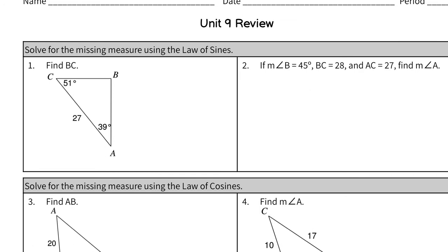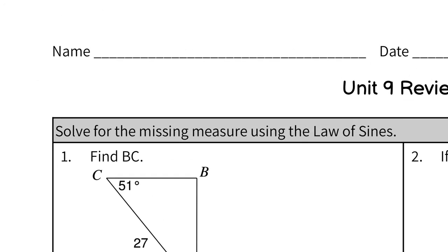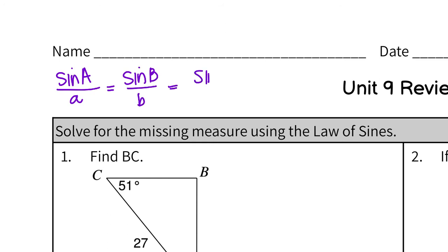So with law of sines, it's the one that had fractions in it. So the sine of each angle — sine of capital A — divided by its opposite side, is proportional with each angle and side in the triangle. Capital letters are angles, lowercase is the opposite side. All of these ratios are proportional, and you're never going to need to use all three, just two at a time.